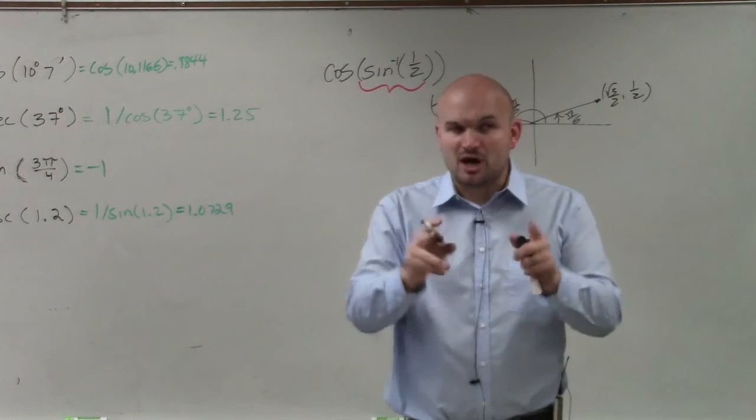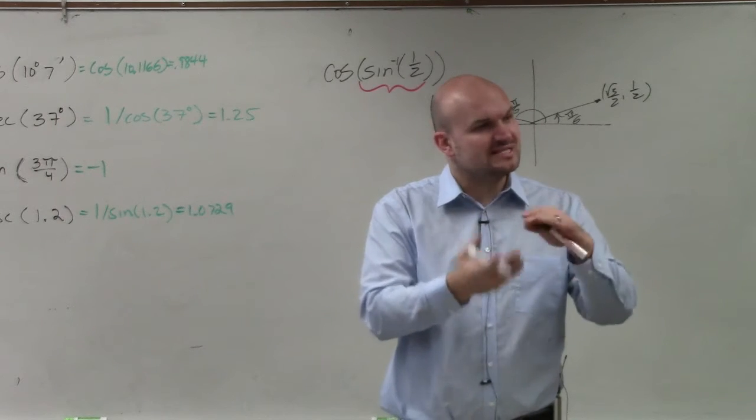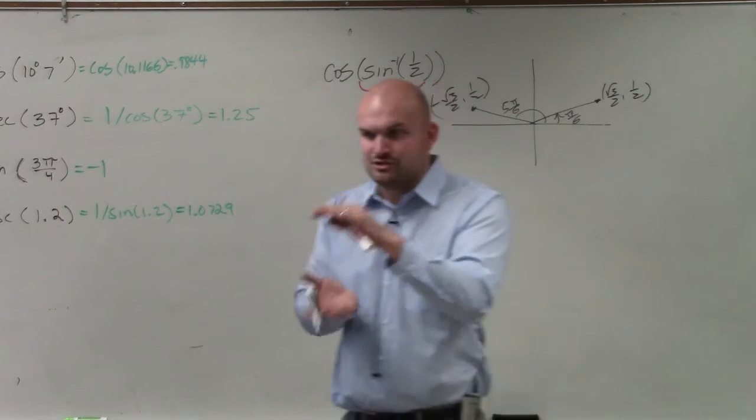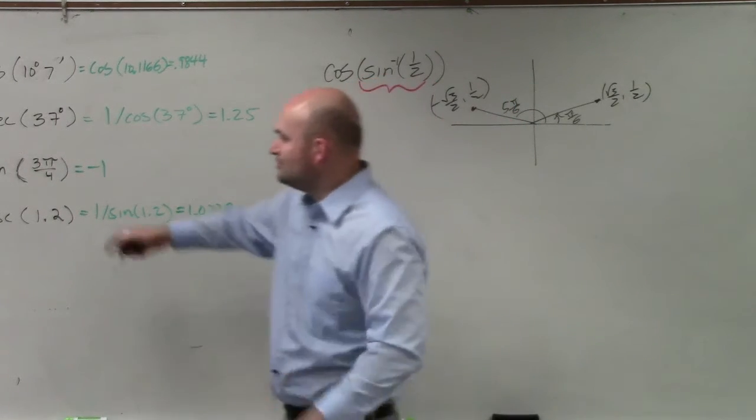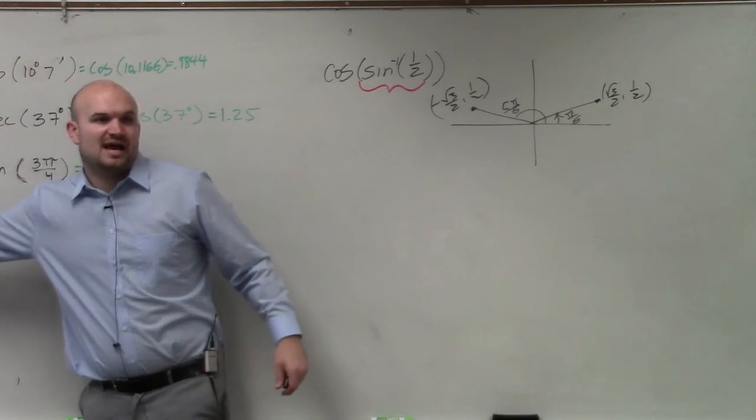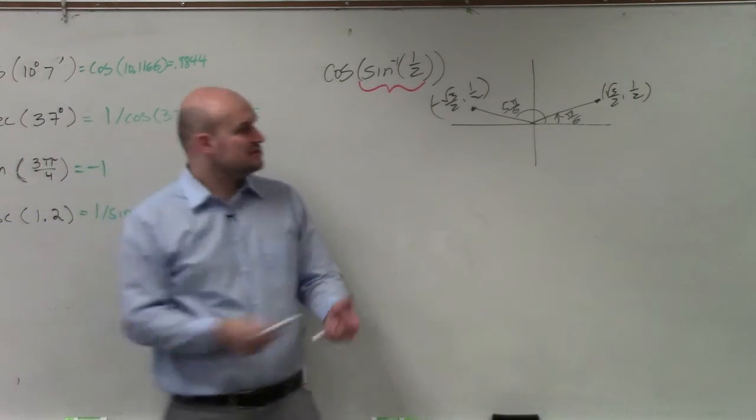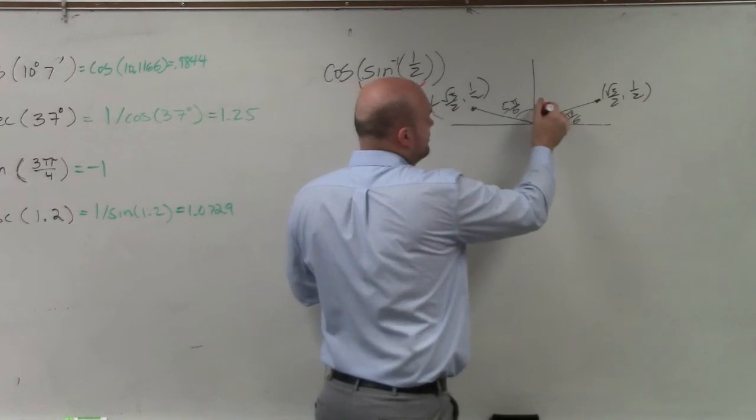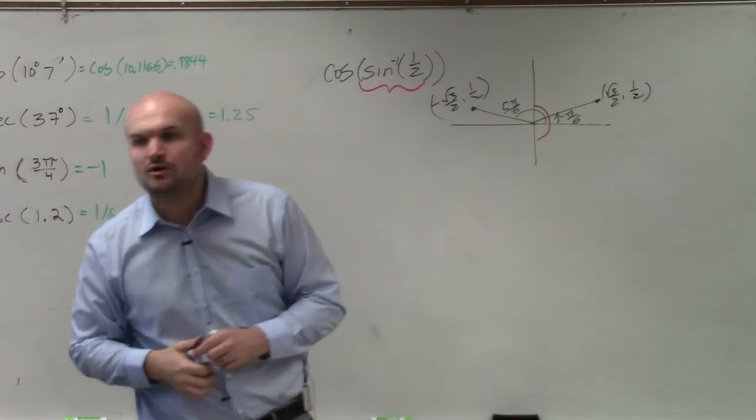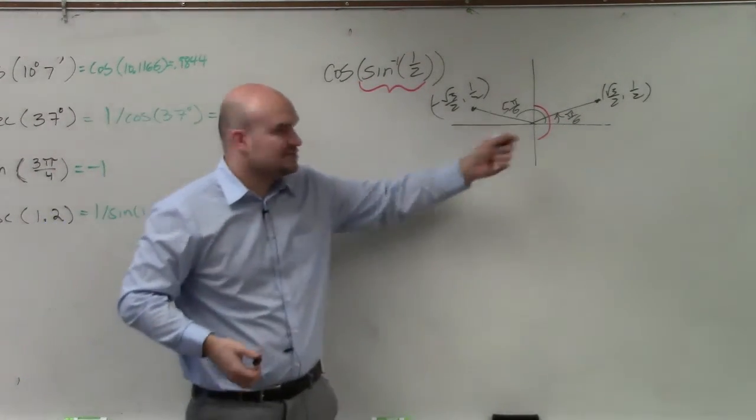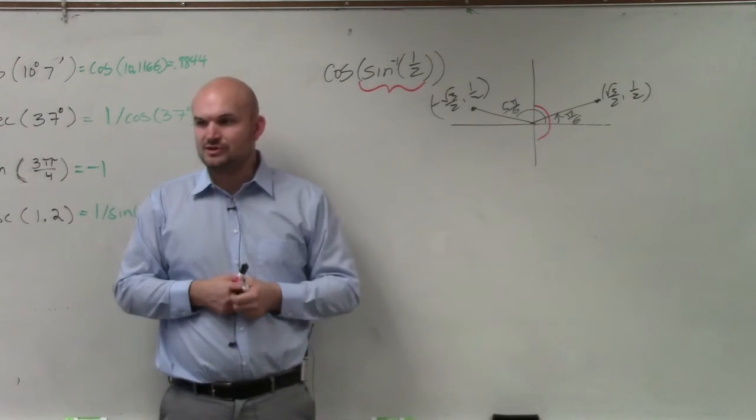Yes? But also through my knowledge, I know that sine, the inverse sine, is restricted, right? It's restricted between negative pi halves and pi halves. So my angle can only fall within the first two quadrants. So what is the only, what is the angle, pi over 6 or 5 pi over 6, that falls within those two constraints?